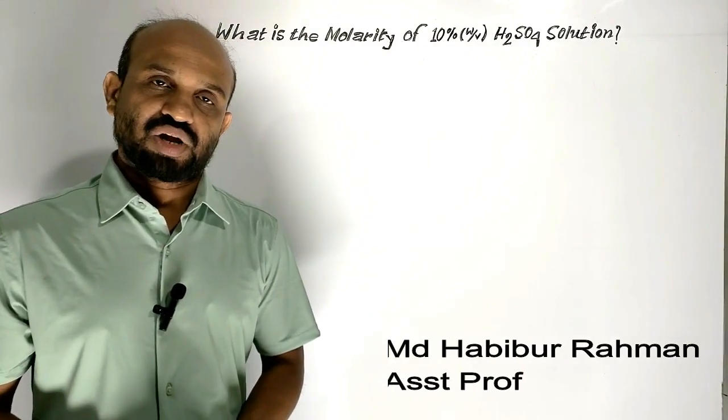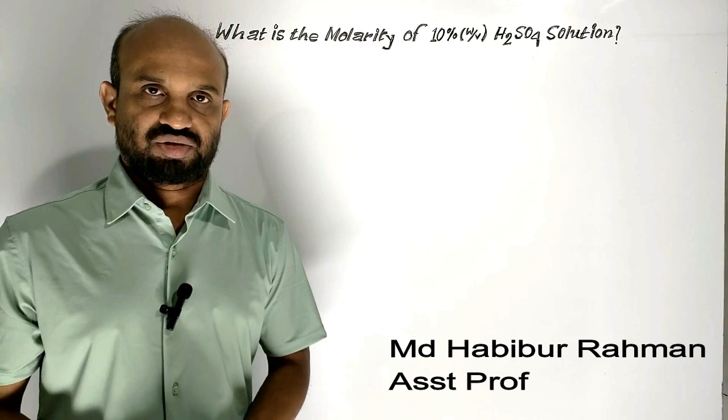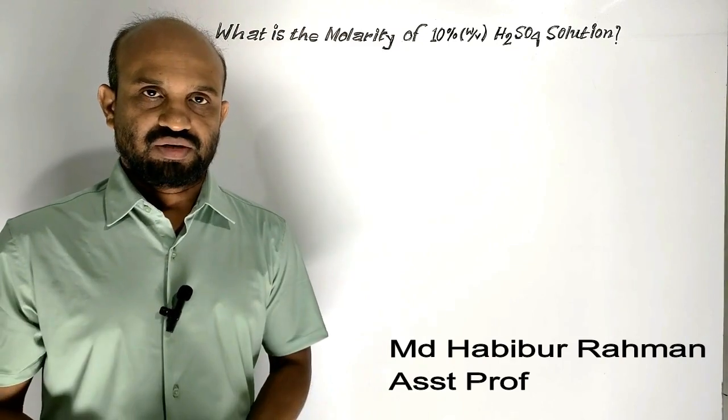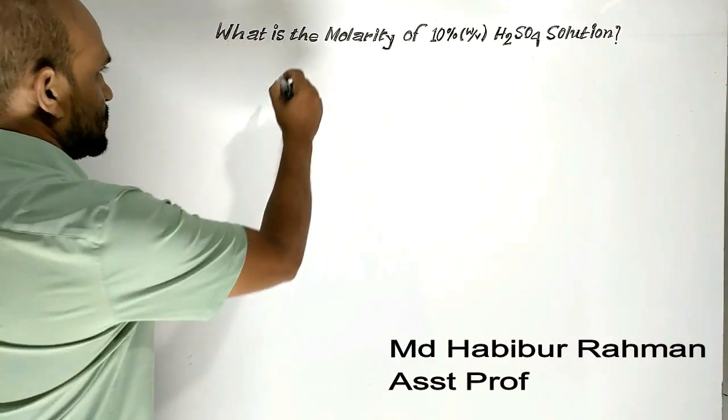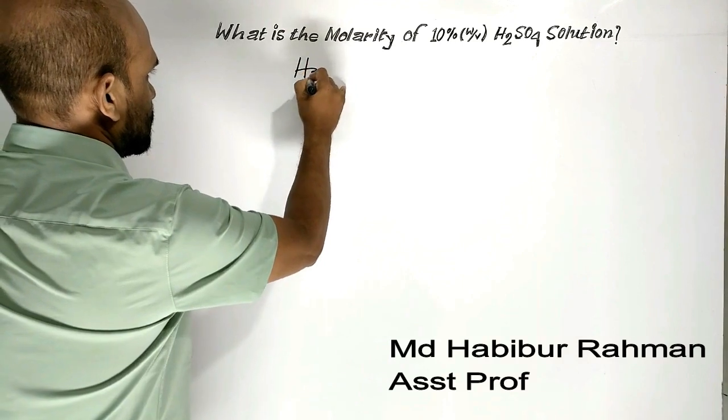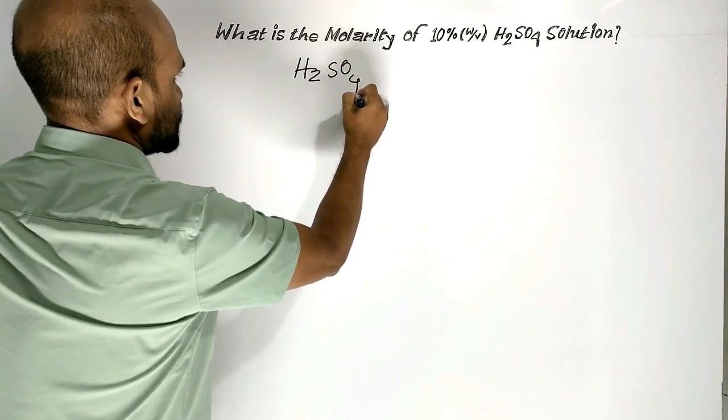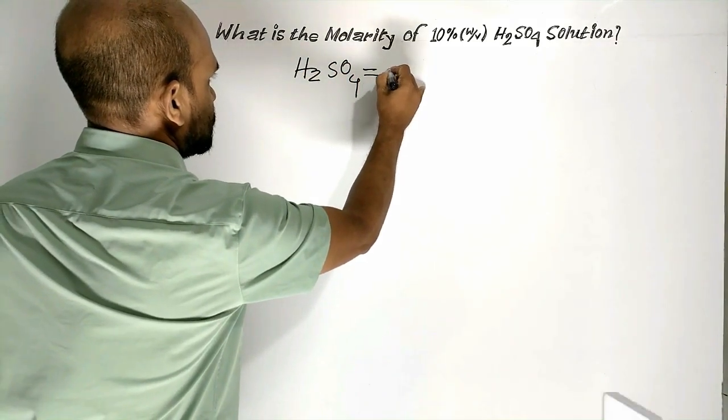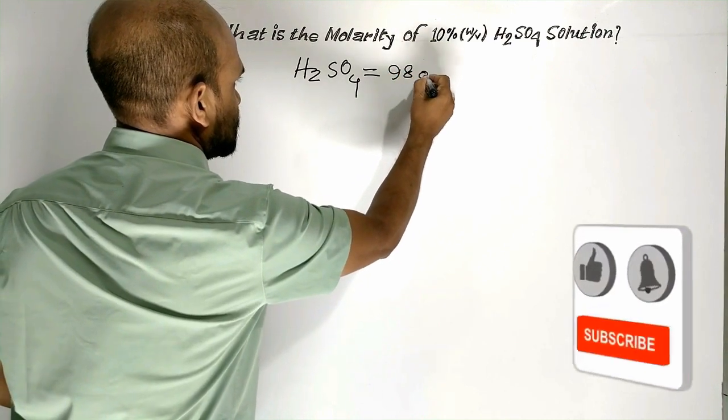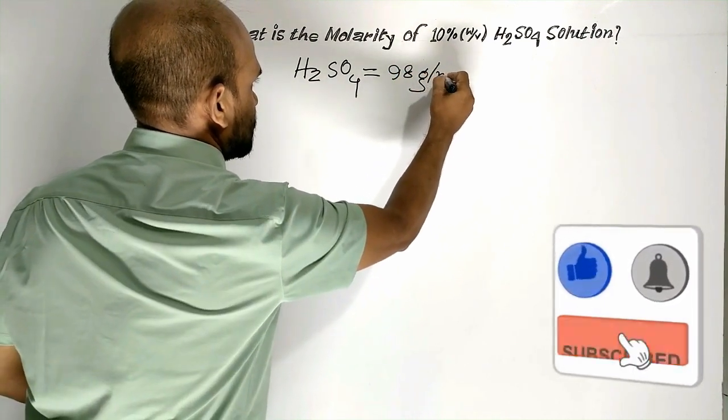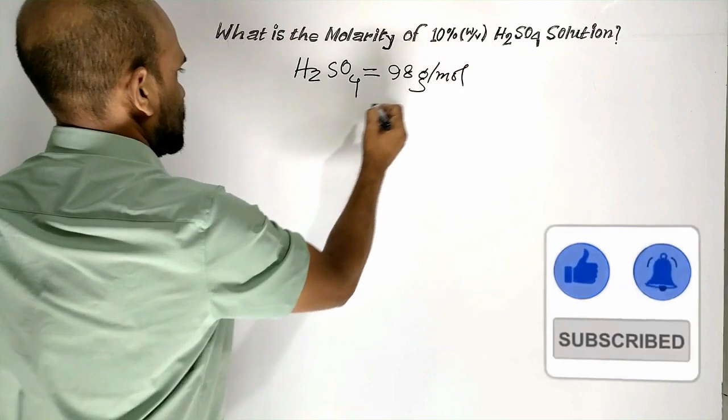We have to calculate the molarity of 10% sulfuric acid solution. Let's proceed. We know the molar mass of H₂SO₄ is equal to 98 grams per mole.